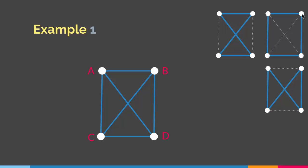So as you can see, I have decomposed the graph based on how many Hamiltonian circuits I have. Therefore, this is a Hamiltonian decomposition.